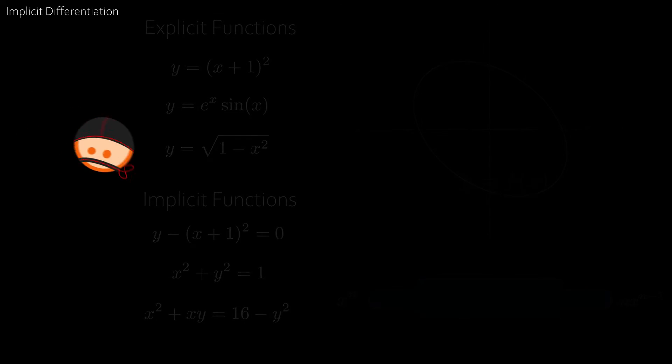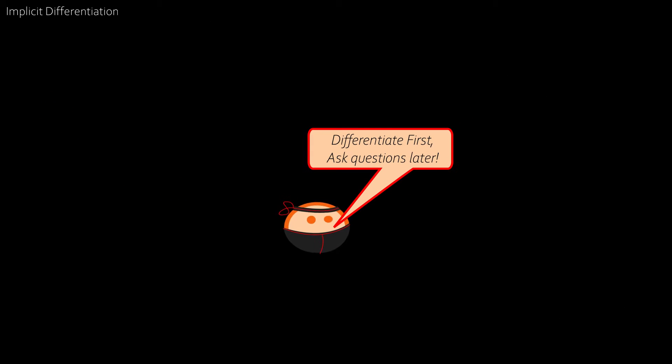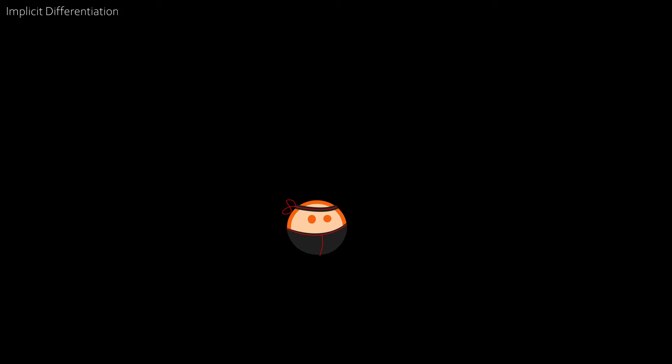Now implicit differentiation essentially follows a differentiate first and ask questions later approach. For example, take the equation for the good old unit circle and let's differentiate both sides and ask questions later. The derivative of 1 is zero, and we can split the derivative on the left hand side. The derivative of x squared is just 2x, and the derivative of y squared is... wait a second, how do we differentiate y squared with respect to x? Normally we would need some sort of function of x.